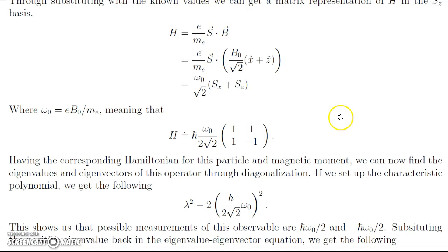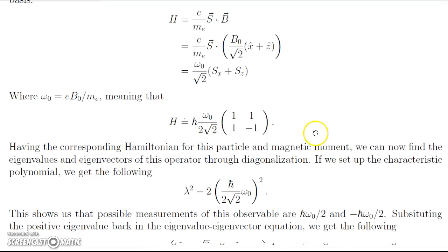Through setting up the characteristic polynomial by looking at the determinant, we get this following characteristic polynomial, which is λ² minus (ℏ/(2√2) ω_0)².